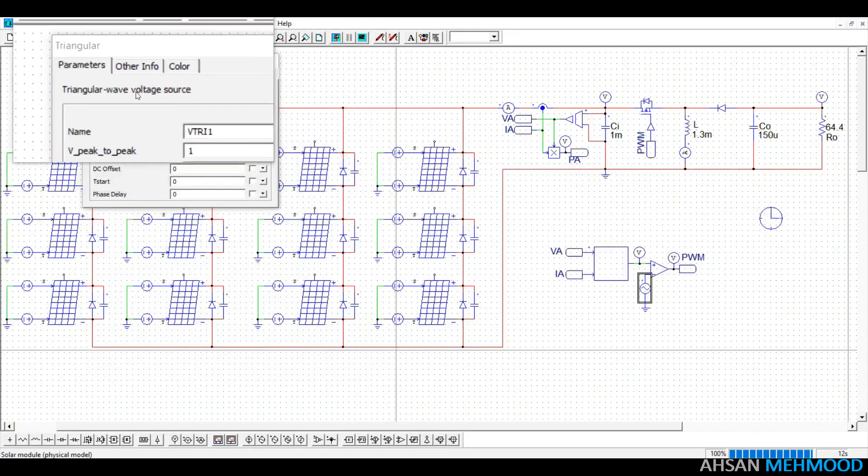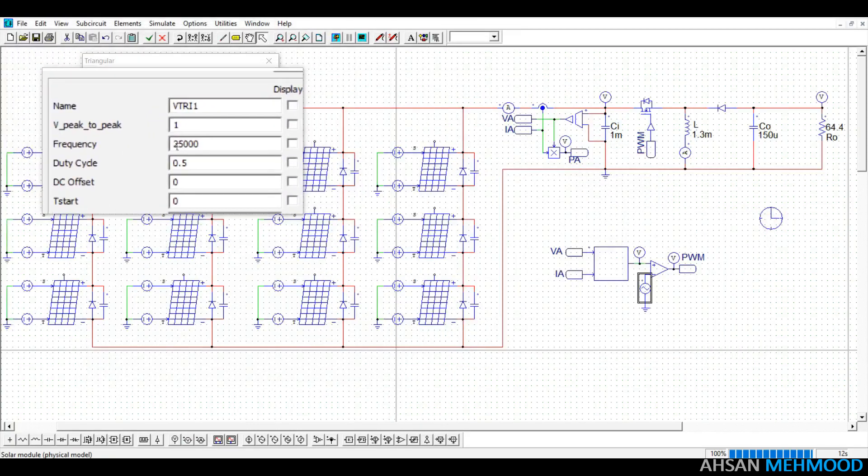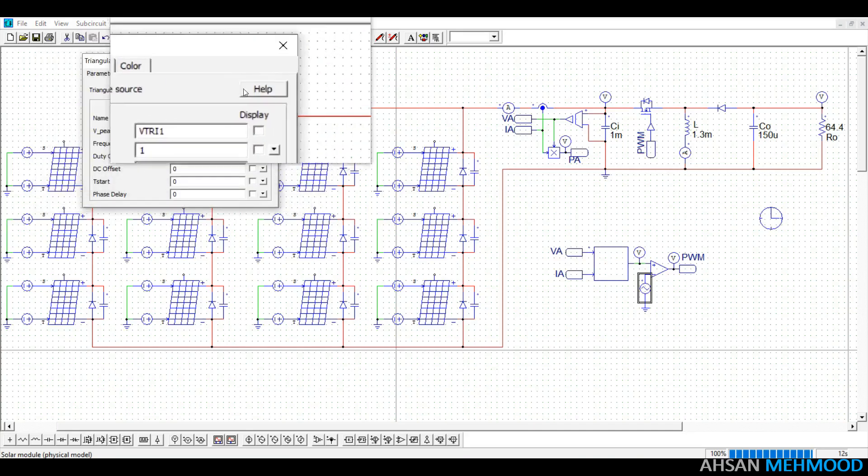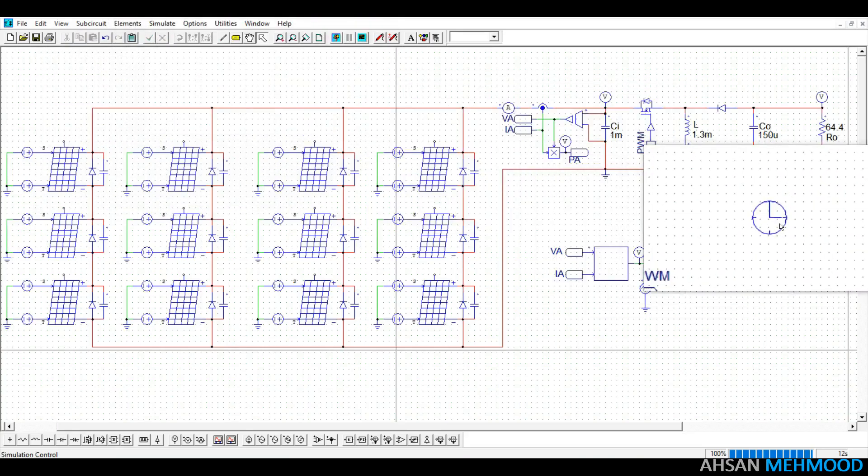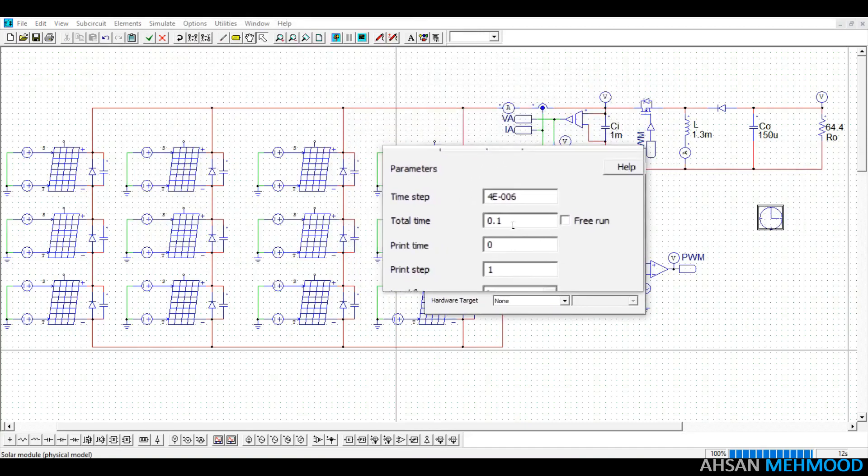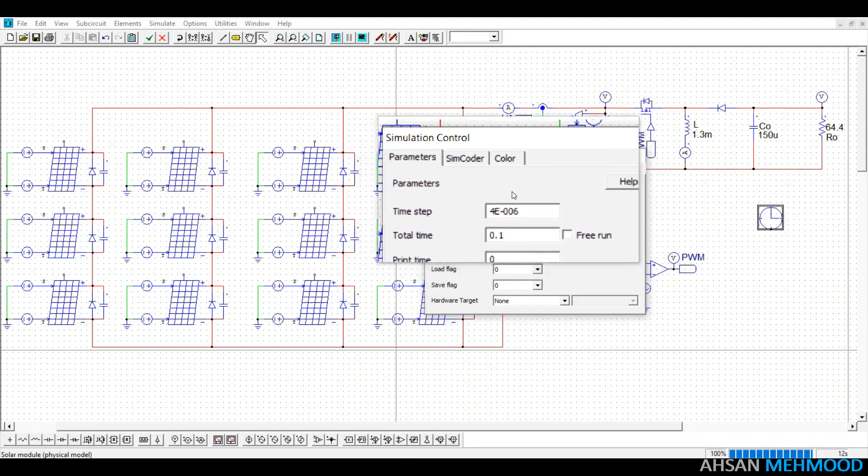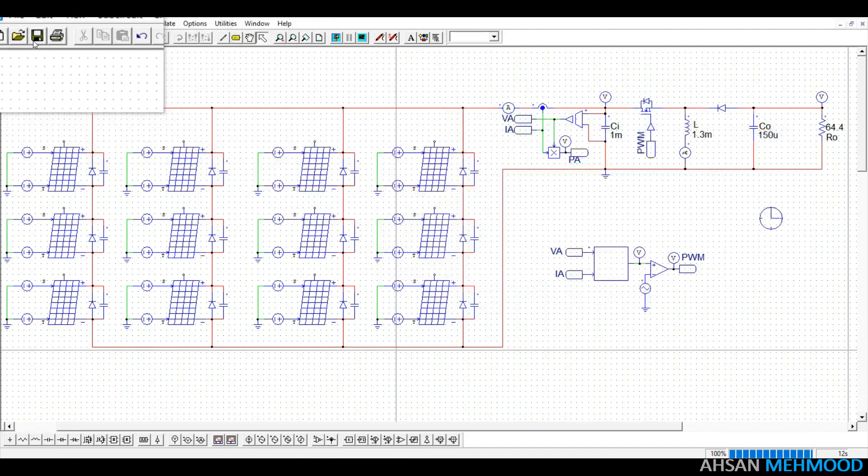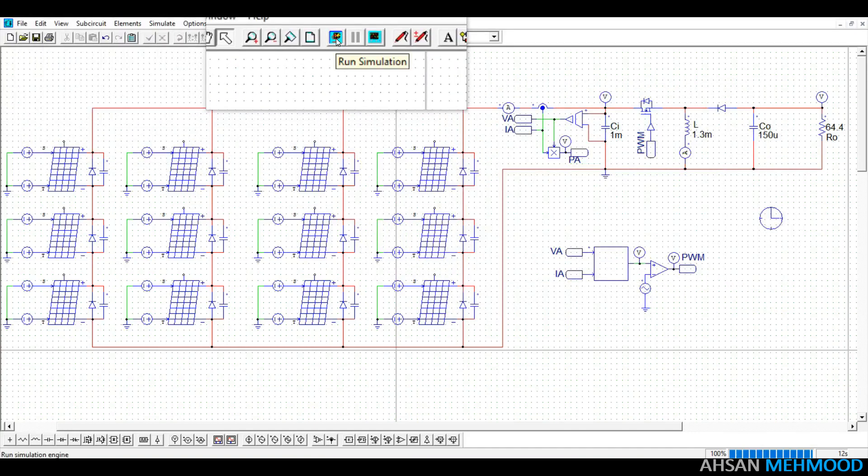The switching frequency of the triangular wave voltage source has been set to 25kHz. The simulation total time is set to 0.1 seconds with a time step of 4 microseconds in the simulation control. Now it's time to put the simulation to the test.